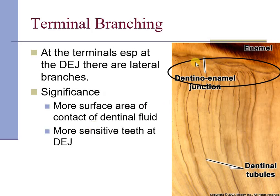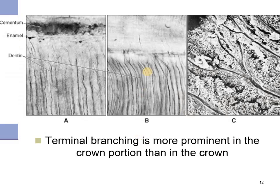At the end of the dentino-enamel junction, Y-shaped dentinal tubules are seen — these are branchings of the dentinal tubules. This increases the surface area at the dentino-enamel junction, allowing more contact of the dentinal fluid, making the tooth more sensitive at the dentino-enamel junction. These terminal branchings are more prominent, as seen in the electron microscopic appearance.